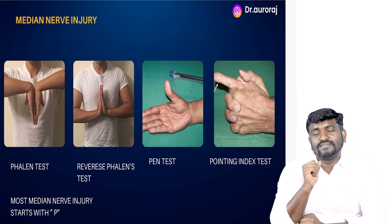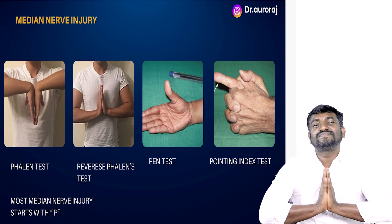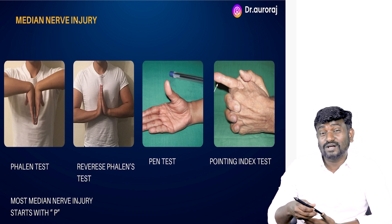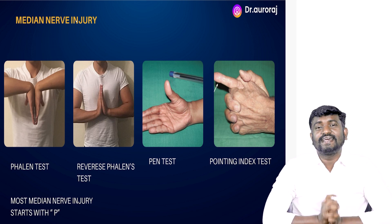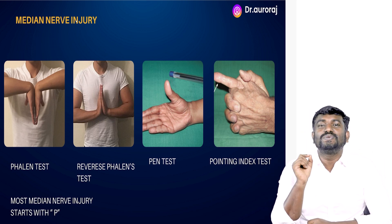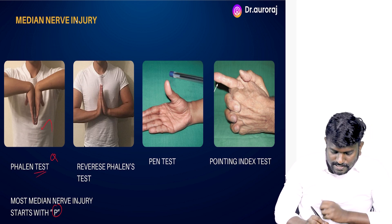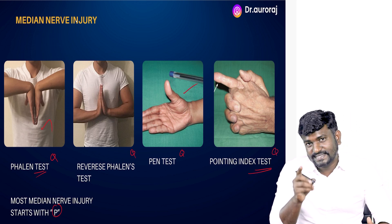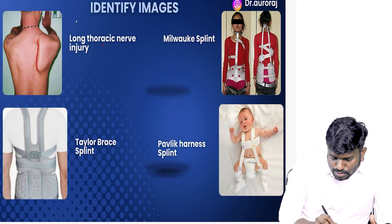Median nerve injury is very important to revise. This test is called the Phalen's test, whereas this is called the reverse Phalen's test. This test over the thumb with the pen is called the pen test, also done for median nerve injury. Next, we have the pointing index test. Luckily, all these tests start with the letter P — most median nerve injury tests start with letter P. This image is called winging of scapula, which is due to long thoracic nerve injury.